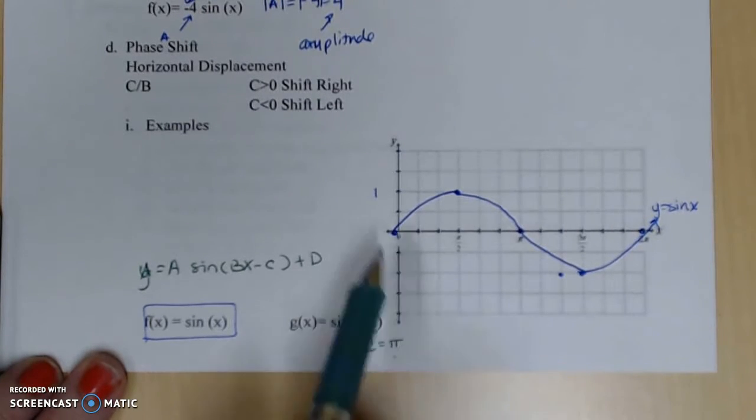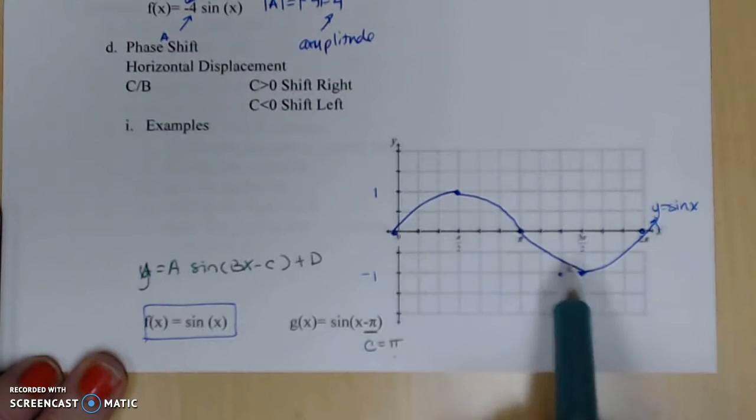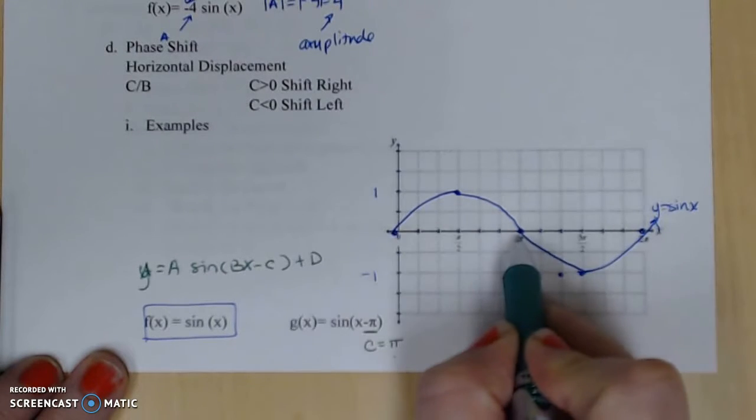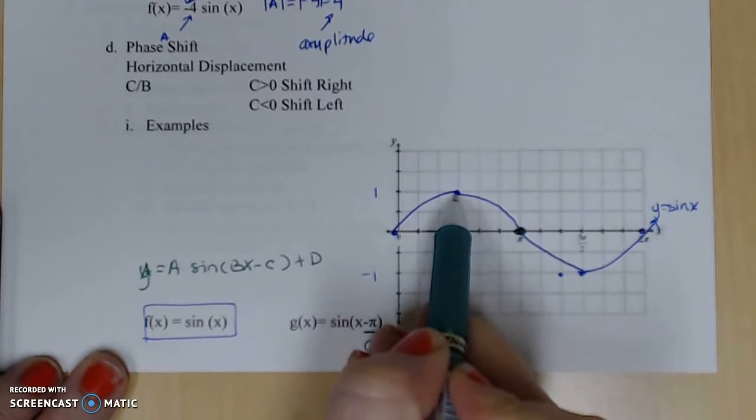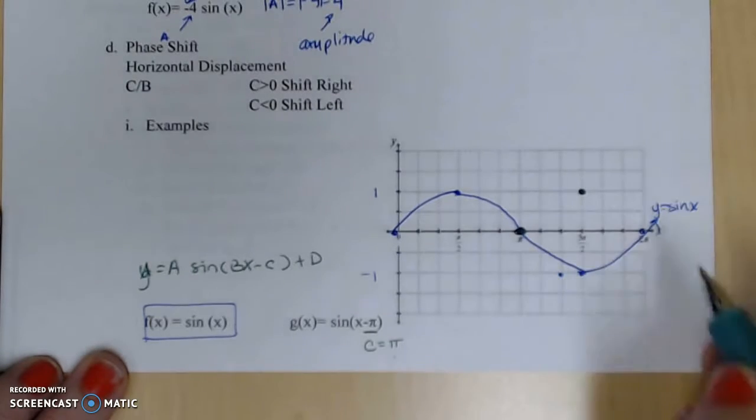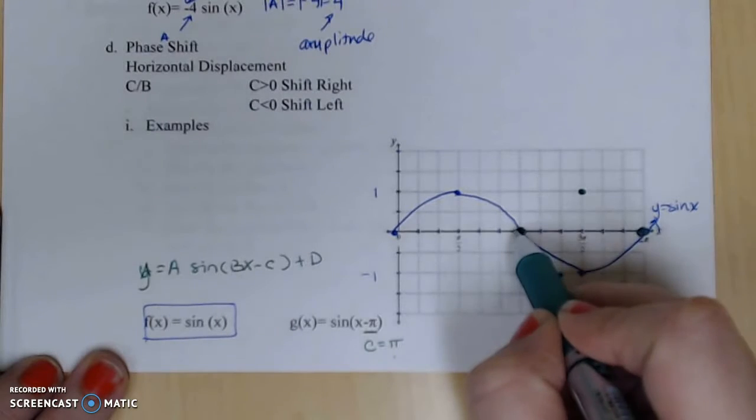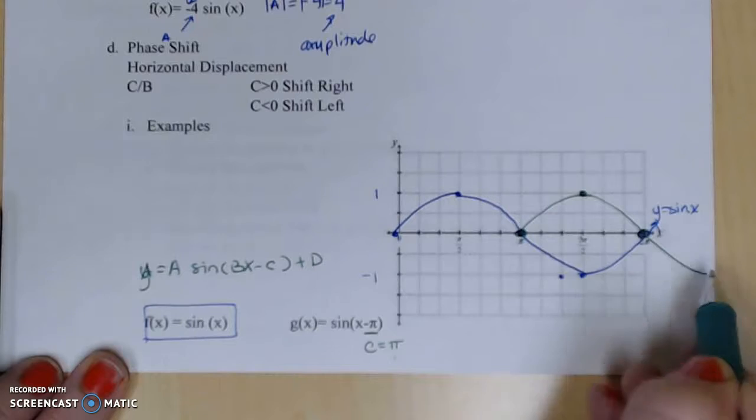Pi is greater than 0, so we're going to be shifting each of these points to the right pi units. And so if I shift this one over to the right pi units, I get this point. If I shift this point here at pi over 2 over pi units, I'm now at 3 pi over 2. The same is true, pi now moves to 2 pi, and you can see that this function would shift this direction.